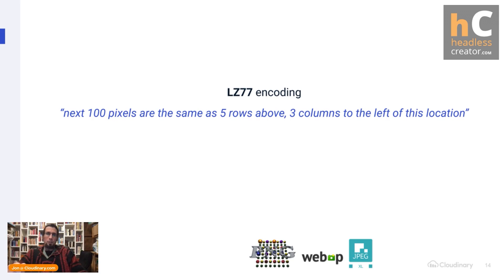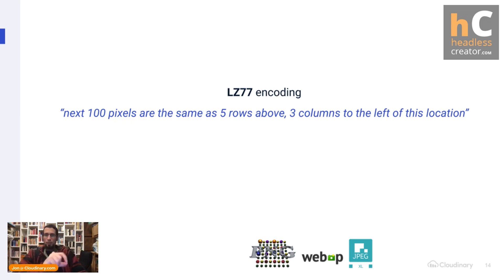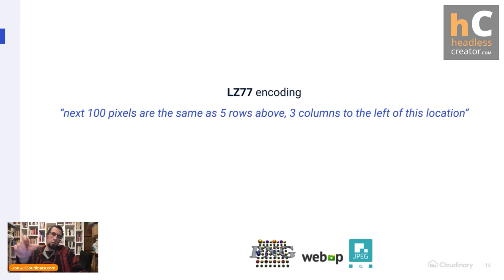A more advanced version of run length encoding is LZ77 encoding, where you don't only have the same value repeated, but you can copy elements from another part of the image already decoded — basically instructions saying 'for the next this many pixels, go back that many pixels and copy from there.' If you have a screenshot with text, the same letter appears in many places, so this encoding is very effective: you only need to encode a letter shape once, and then reference it from elsewhere in the image as a more compact description.